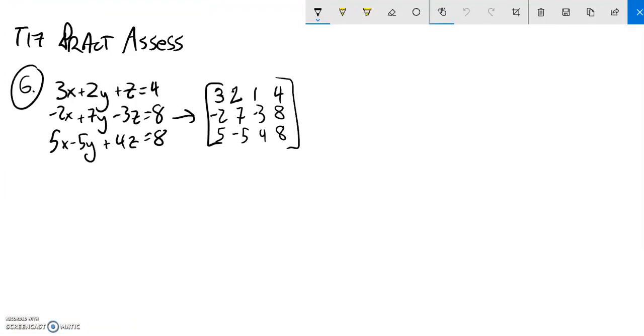We are supposed to solve this system of equations. Notice I've already written it as a matrix because I like matrices. What I'm going to do is make some zeros. I'll make this into a zero and I'll make this into a zero.